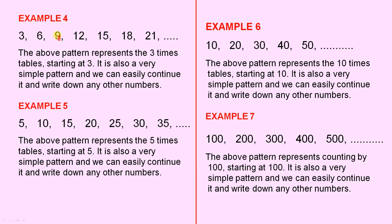Example 4, 3, 6, 9, 12, 15, 18, 21. The above pattern represents the three times tables starting at 3. And it's easy to continue because the next one all you do is add 3 and that gives you 24.